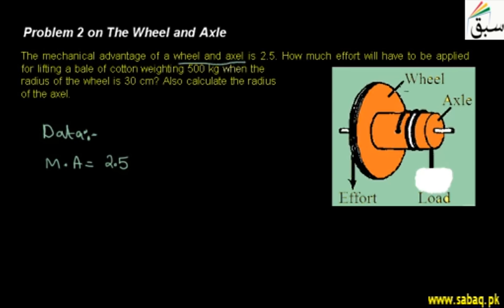Wheel and axle, which you can see in the figure. One wheel has a big radius in a circular shape. We have a rod which is called the axle. The wheel and axle turns on the axle. At the end, you keep the load and effort. If you pull the rope in the downward direction, as a result your load will be able to lift up — you can lift up heavy loads.